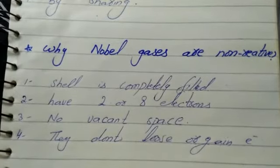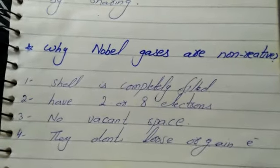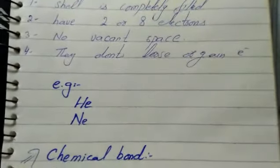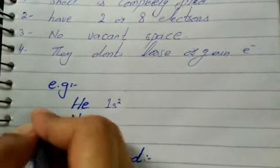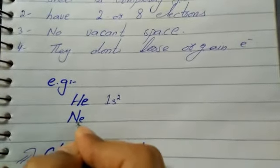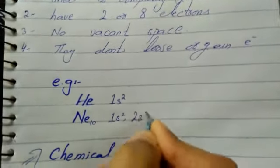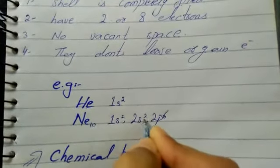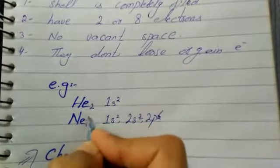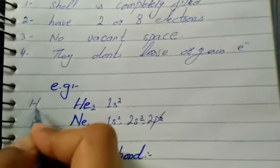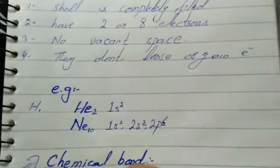Noble gases are already stable so they have no need to form bonds. For example, helium has the electron configuration 1s2 — only 2 electrons. Neon has atomic number 10 with configuration 1s2, 2s2, 2p6 — so there are 8 electrons in the outer shell. Both neon and helium are non-reactive noble gases. Hydrogen, on the other hand, has only one electron in the outer shell, so it will try to gain or share an electron to become stable.